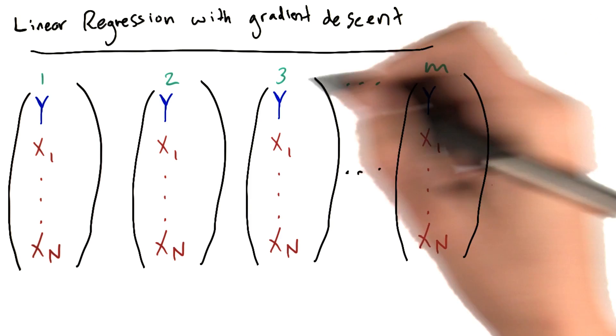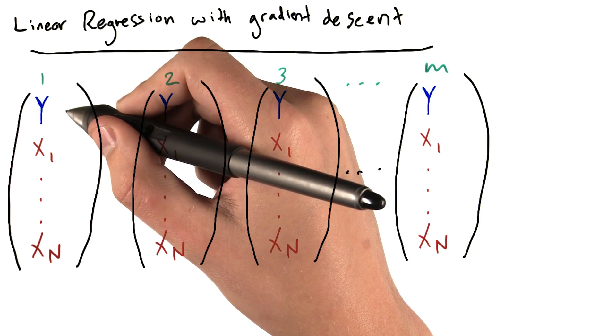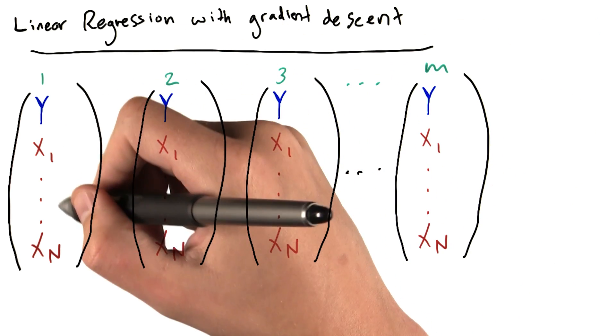Each data point has an output variable y and a number of input variables x1 through xn.